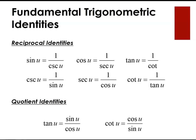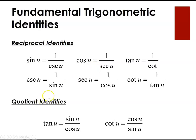The important reciprocal identities to remember are: sine theta equals 1 over cosecant theta, cosine equals 1 over secant, and tangent equals 1 over cotangent. Sine and cosecant are reciprocals, cosine and secant are reciprocals, and tangent and cotangent are reciprocals. For quotient identities: tangent theta equals sine theta over cosine theta, and cotangent equals cosine theta over sine theta.